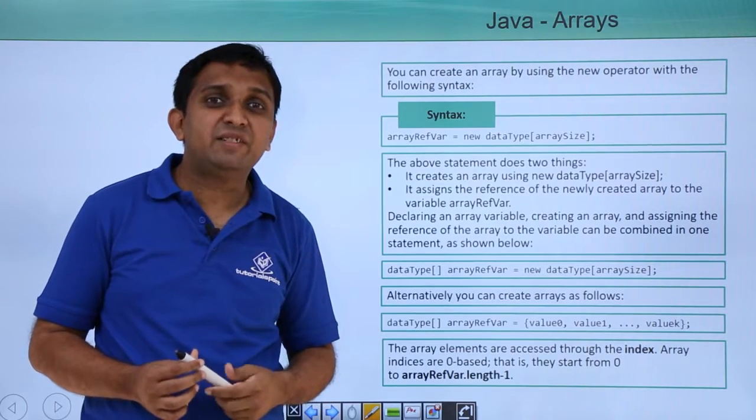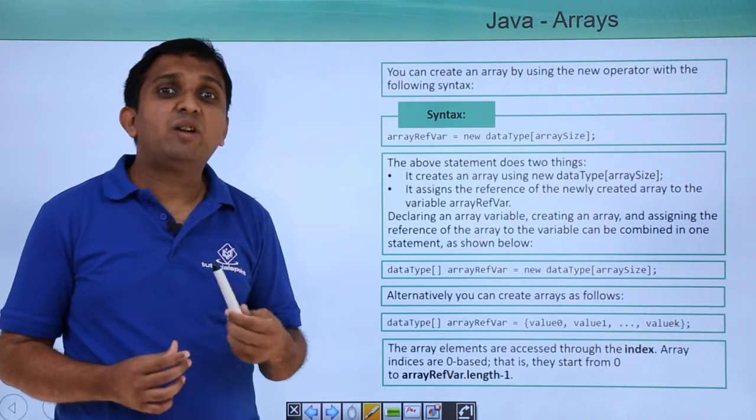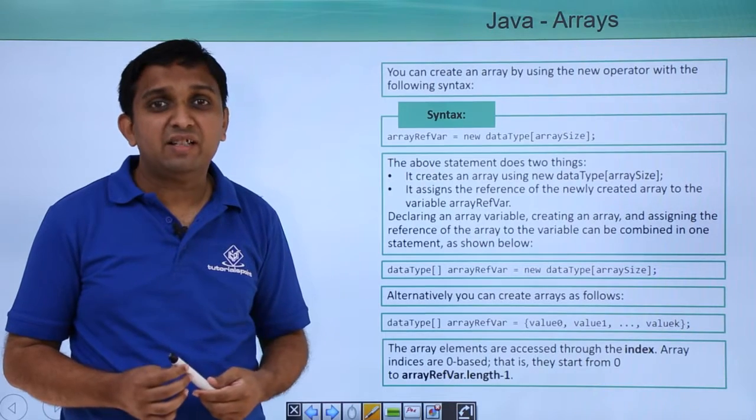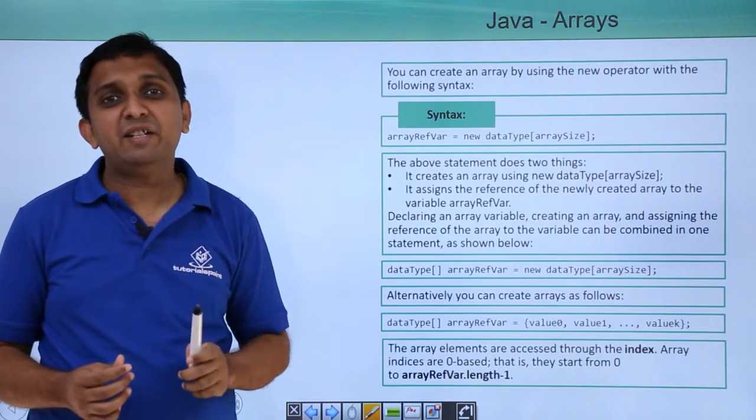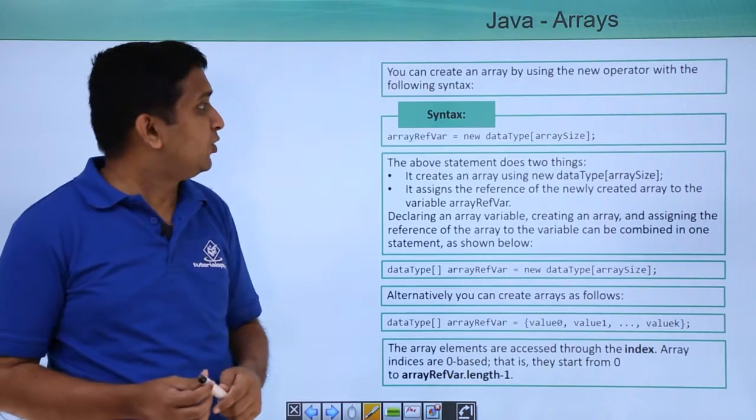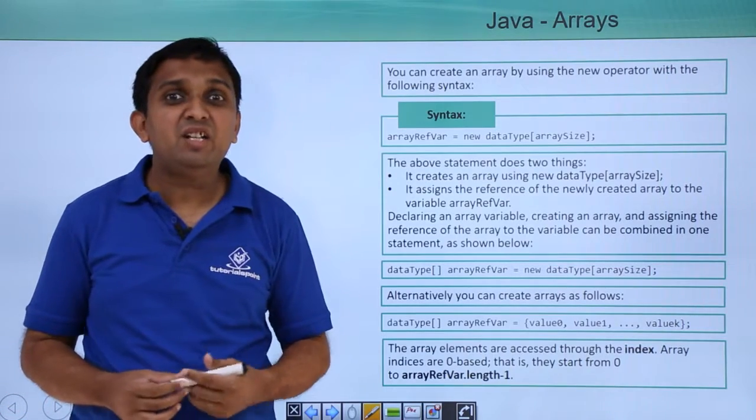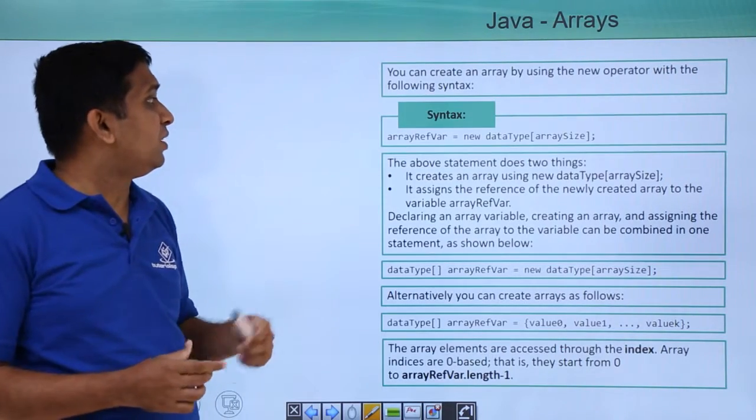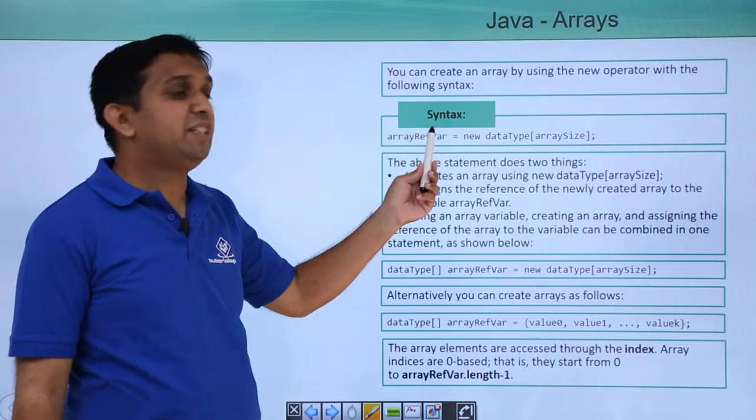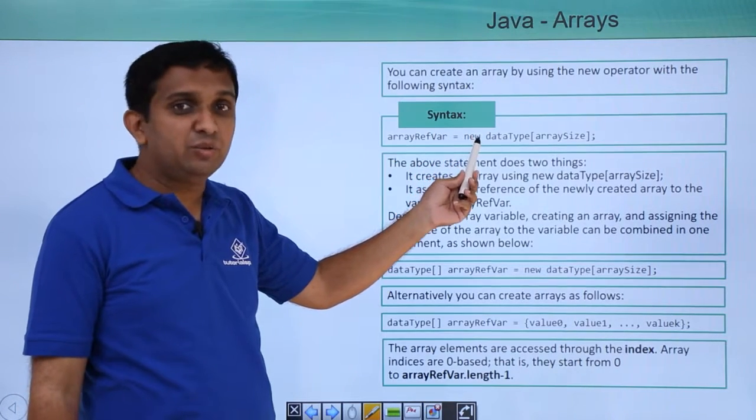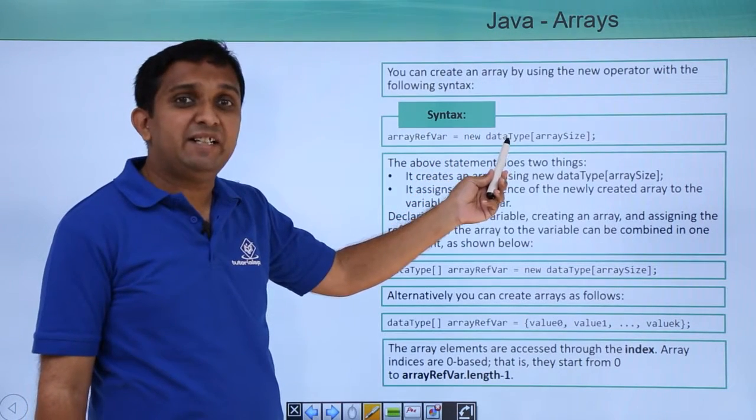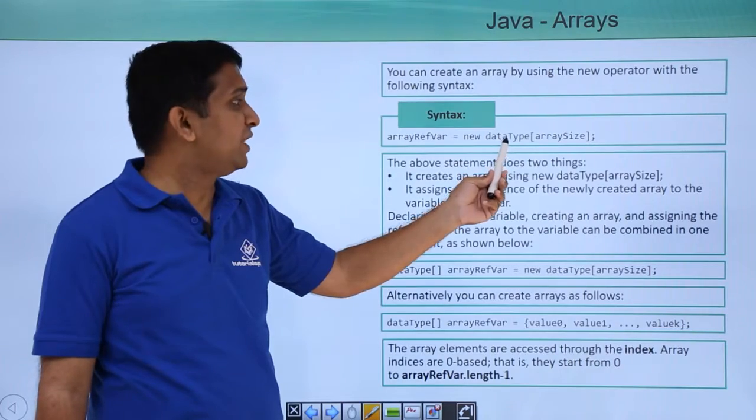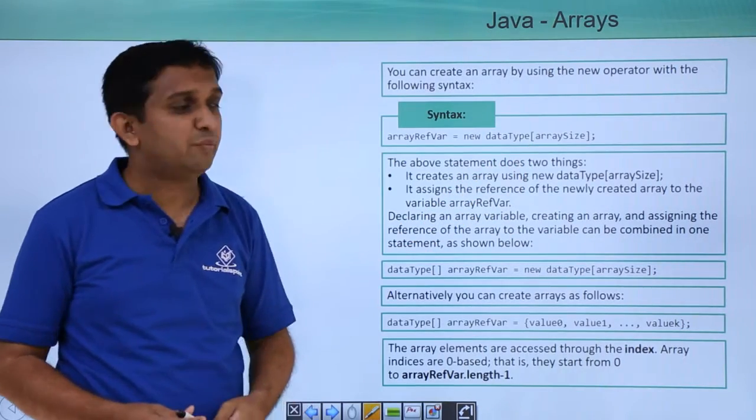After you create the reference, the next thing is allocating memory for the array. You need to remember that array elements are always stored on the heap. Memory is allocated when you write the new keyword. So you will take the reference equals to new keyword, and after that, the data type of which you want to create the array, and then the size of the array in the subscript.